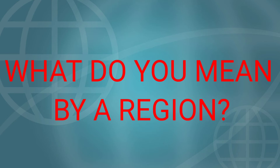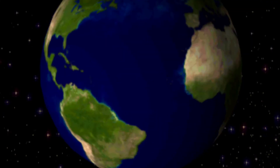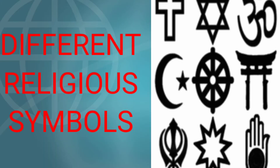Many geographers in the world have done regional geographic study or associated themselves with regional planning and have put forward different views about region from their own experiences. So, what do you understand by a region? The definition of a region is: a region is an area having common characteristics — climate, topography, land surface, language, religion, etc. That particular area will be considered as a region.